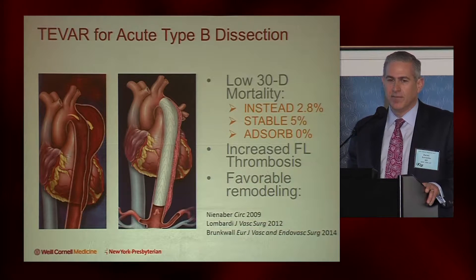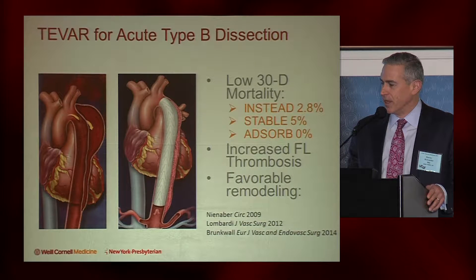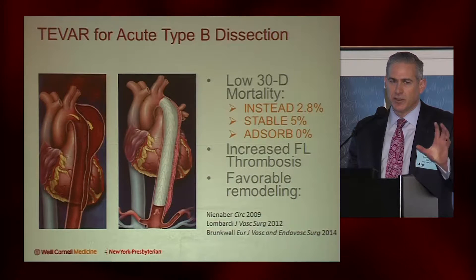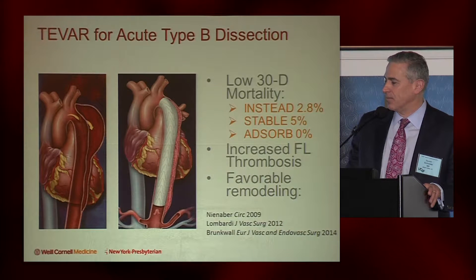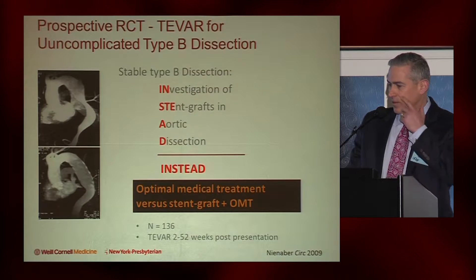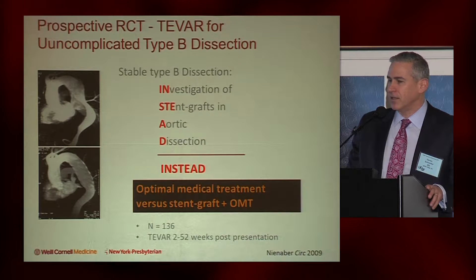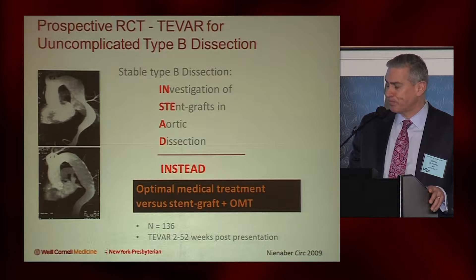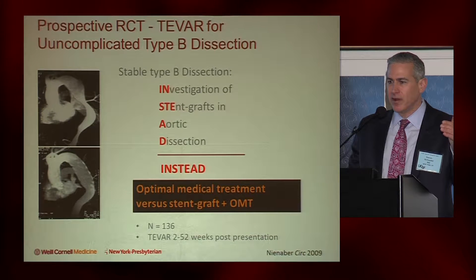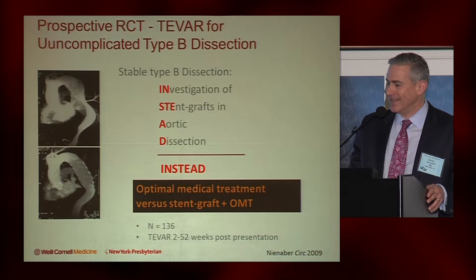We have data from TVAR and clinical trials showing relative safety with low 30-day mortality in the STABLE and ABSORBED trials. In patients treated with TVAR, we can induce false lumen thrombosis and some favorable remodeling. Based on those findings, this was the first real trial looking at uncomplicated type B dissection comparing optimal medical therapy versus TVAR with optimal medical therapy — this was the INSTEAD trial.